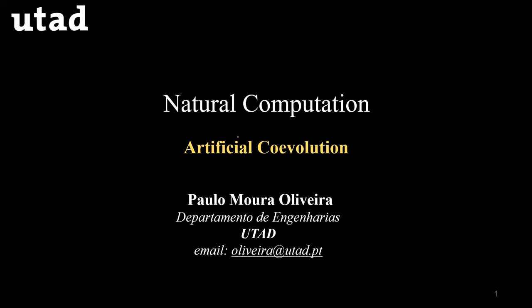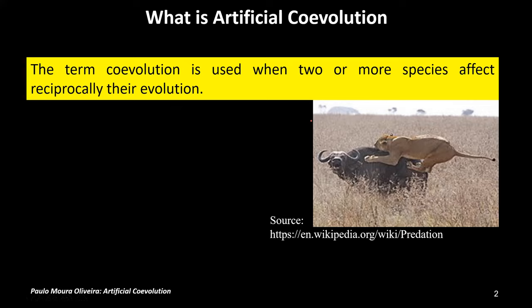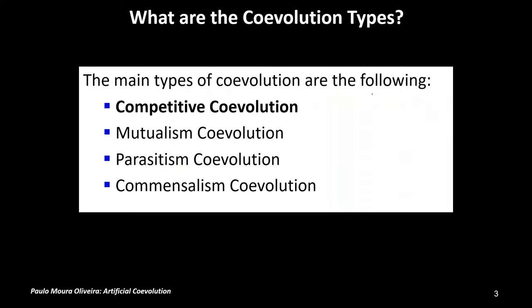In this video I'm going to speak about artificial coevolution. What is artificial coevolution? The term coevolution is used when two or more species affect reciprocally their evolution. We can see here a photo about one of the coevolutionary scenes. This has to do with competitive coevolution, which is one of the main types. We have competitive coevolution, mutualism, parasitism, and commensalism.